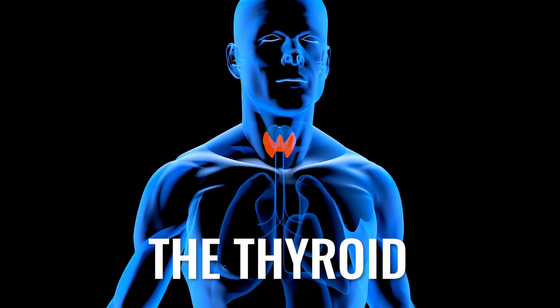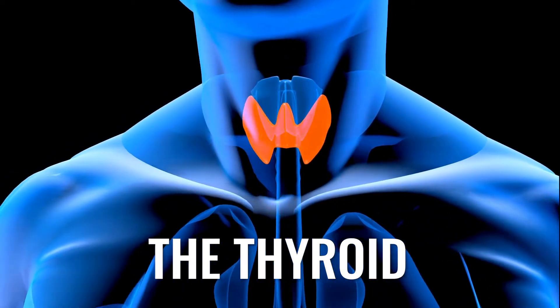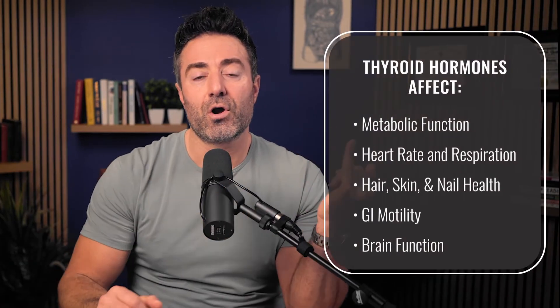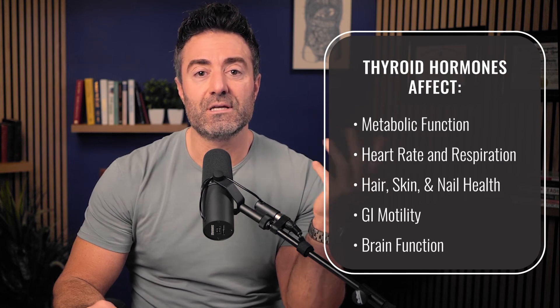To start, let's briefly recap thyroid physiology. The thyroid is located in your throat — a butterfly-shaped gland that produces thyroid hormone. Thyroid hormone is important because it regulates the metabolic rate of every cell in your body. So metabolic function, heart rate and respiration, hair, skin, and nails, gastrointestinal motility, and brain function — all these things can be impacted.